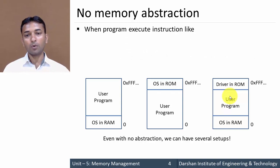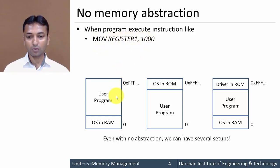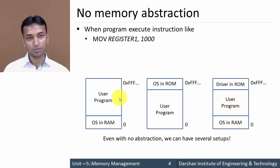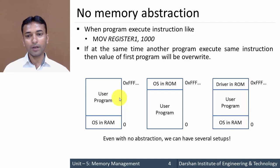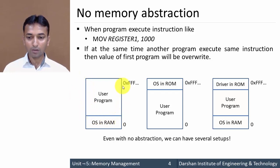Now suppose a program instruction like 'move register 1 to 1000' — this instruction will simply move the content of the register to address 1000. Suppose somewhere here is address 1000, so this program will move the content of the register to address 1000. Now if at the same time another program executes the same instruction, then the value of the first program will be overwritten, because here we are having a single piece of memory.